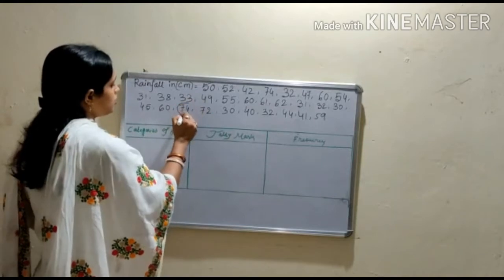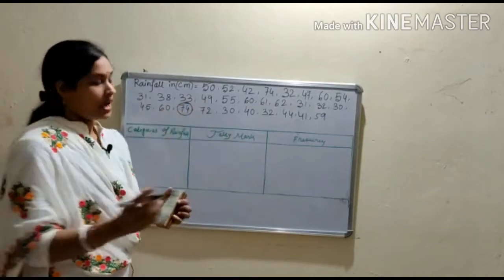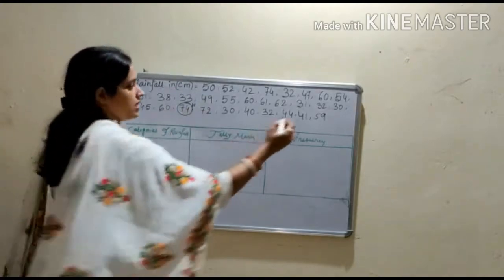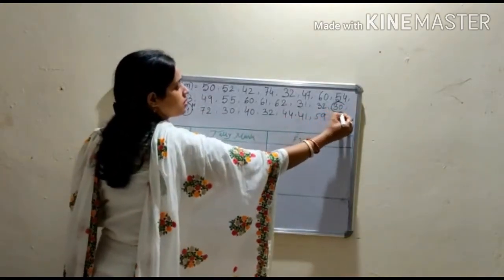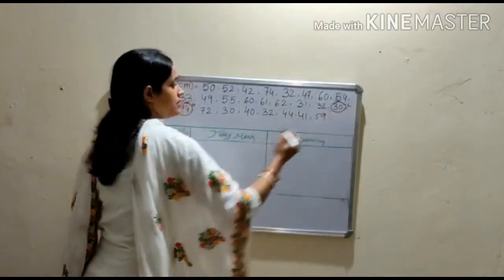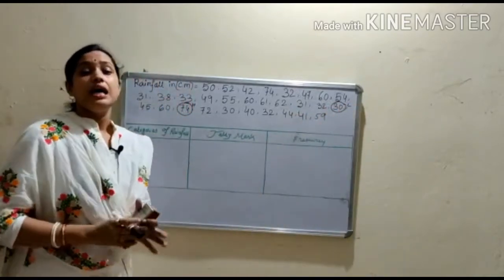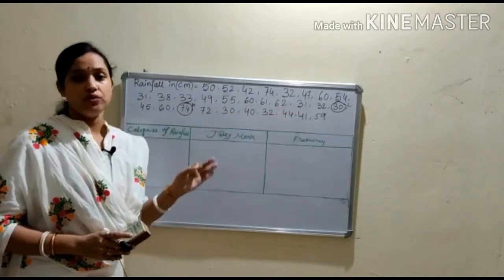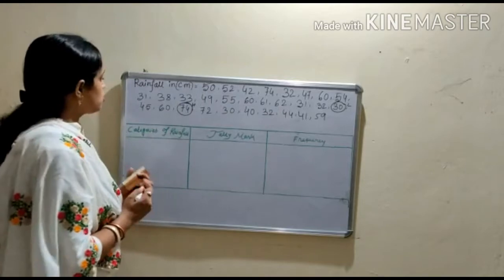So here, highest value is 74, so I'm going to write here H. And lowest value is 30, so I'm going to write here. And now difference between the highest and the lowest value, we have to find out first of all.